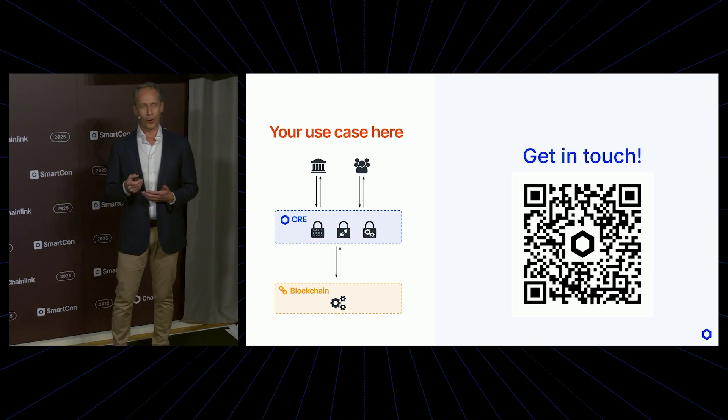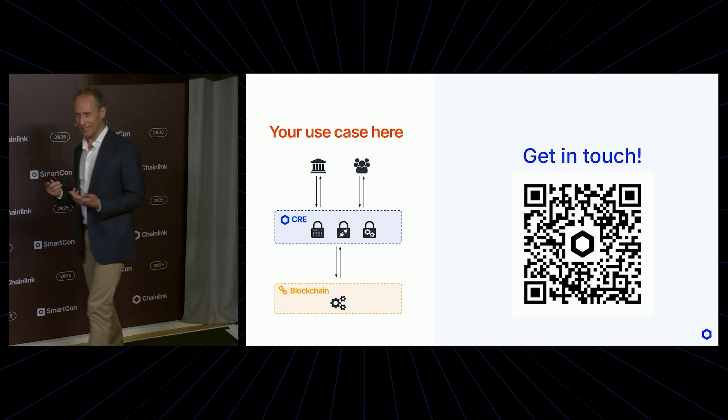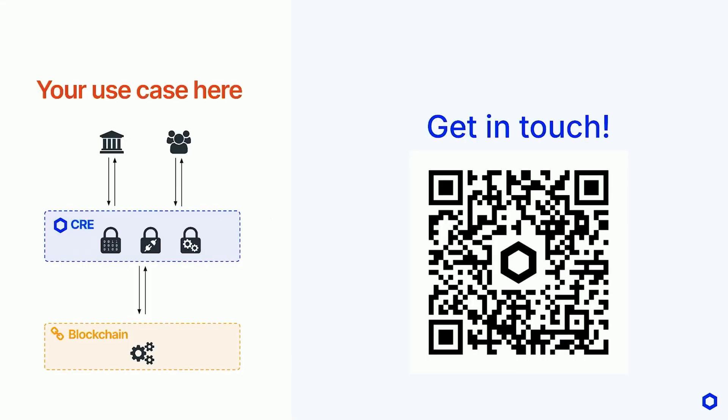All of these use cases hopefully give you a taste of the possibilities of Chainlink Confidential Compute. I'm sure we're still missing a whole lot of other use cases. So in case you've ever been thinking about a problem that would be great to solve on a blockchain but couldn't because confidentiality wasn't there — look at this technology, get in touch with us, we'd love to brainstorm with you and build it together with you. Thank you very much.